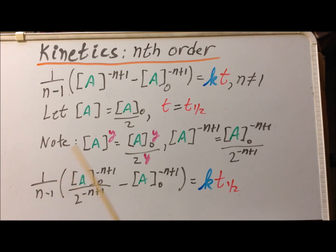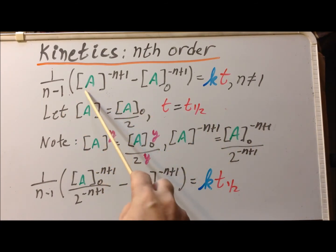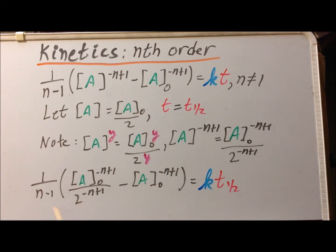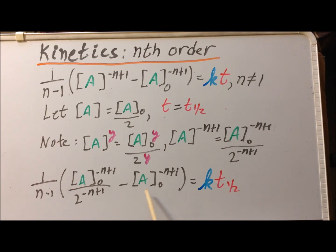If we now substitute this expression into our integrated rate equation, we get this somewhat messy looking 1 over n minus 1 times the concentration of A initial to minus n plus 1 power divided by 2 to the minus n plus 1 power minus the concentration of A initial to the minus n plus 1 power is equal to k times the half-life time t sub 1 half. And in the next step, we're going to simplify this expression to make it more clear.